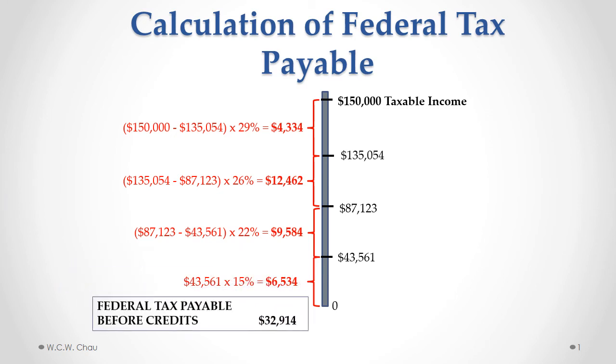that gives us total federal tax payable before applying any tax credits of $32,914.